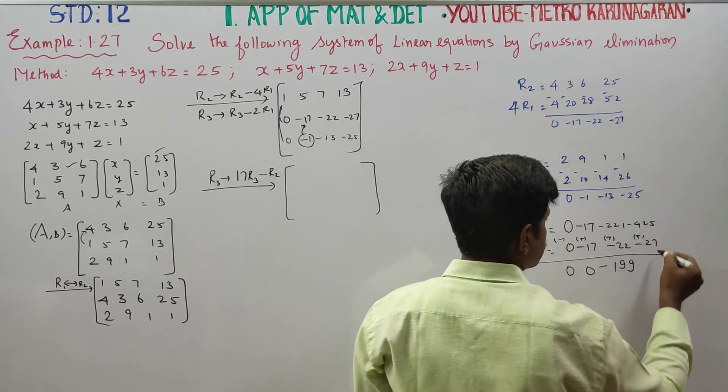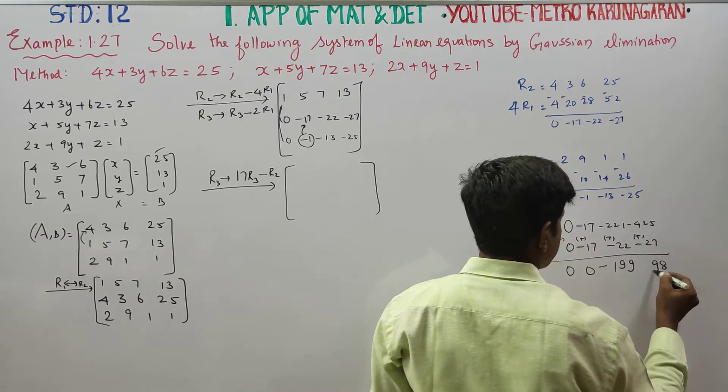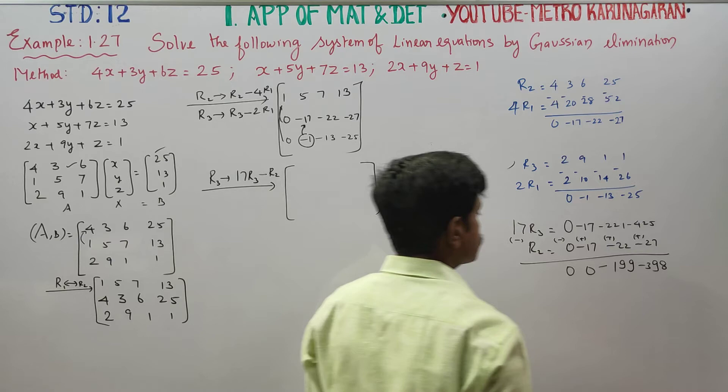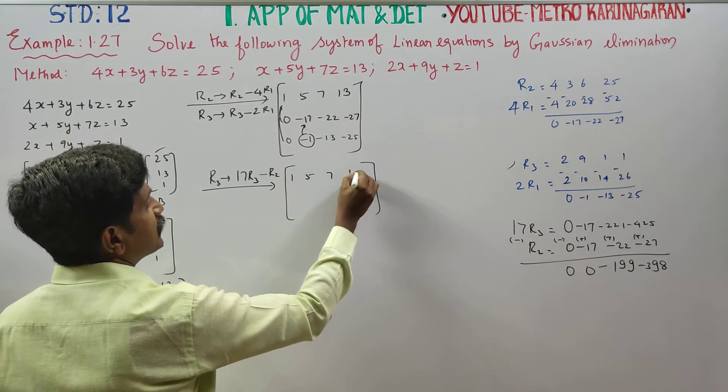You will have minus R2. R2 is 0, minus 17, minus 22, minus 27. Subtraction: change minus minus to plus. You will be getting 199.